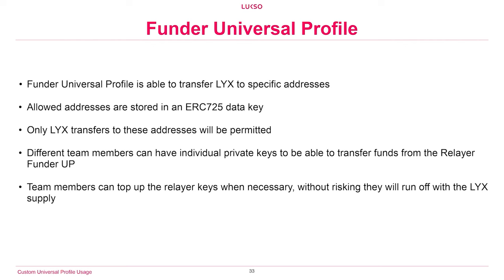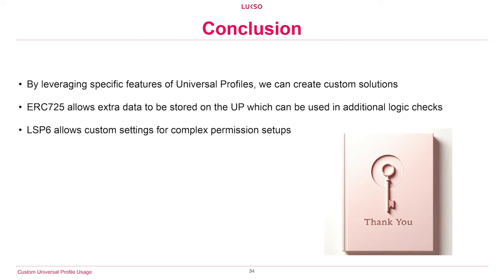Developers can hold controller keys of the funder UP and manage balances by sending LUX to the whitelisted relay keys when they see fit. We don't have to risk developers running off with the foundation's LUX supply, and we don't have to be totally dependent on the foundation to transfer funds. This wouldn't have been possible with just a private key — because giving someone a private key gives them access to everything on it — whereas here the Universal Profile could only send funds to those very specific addresses.